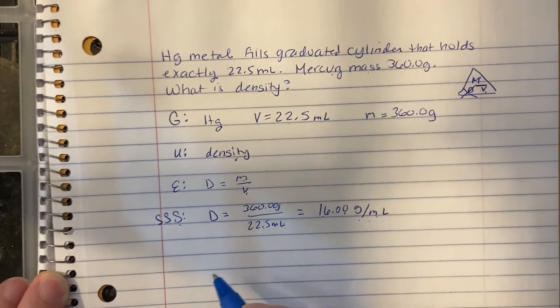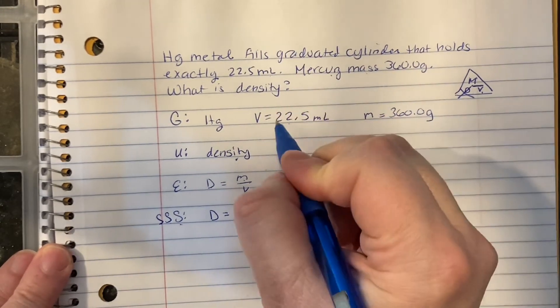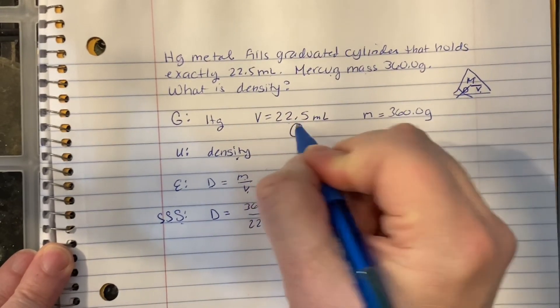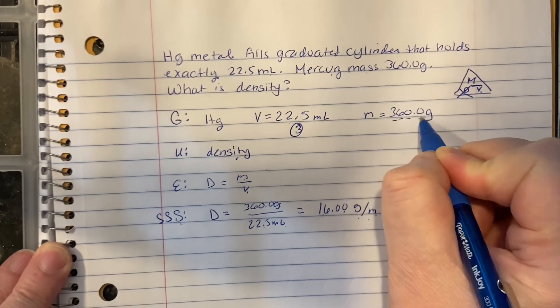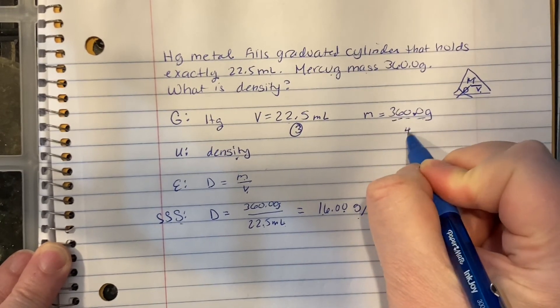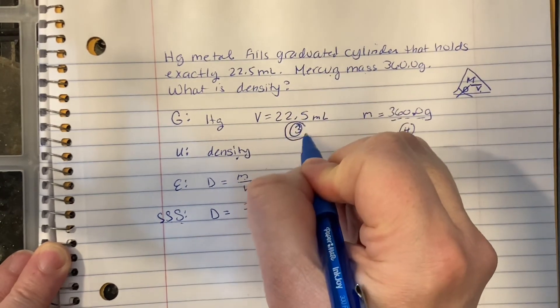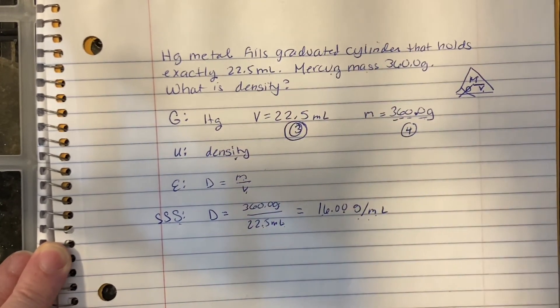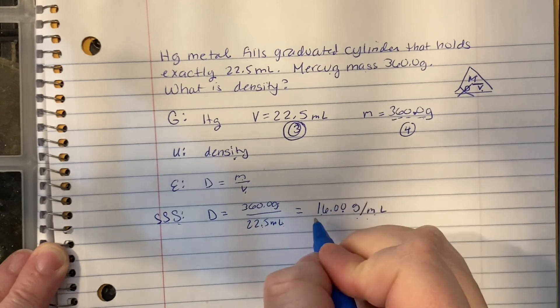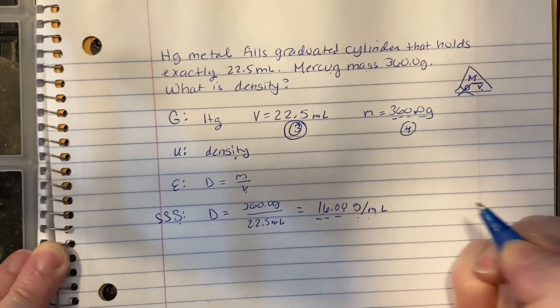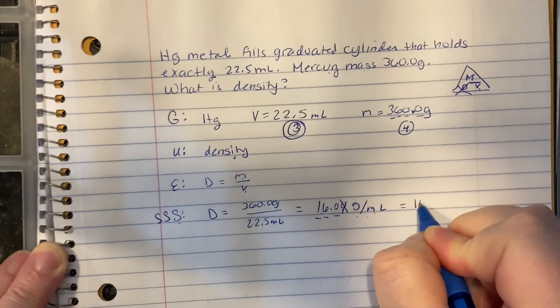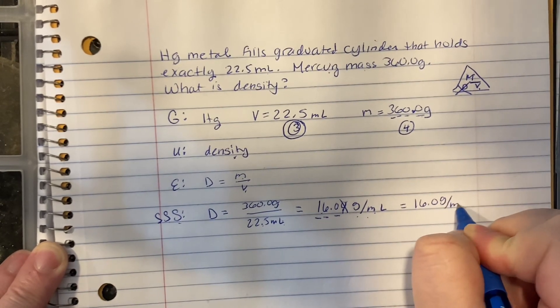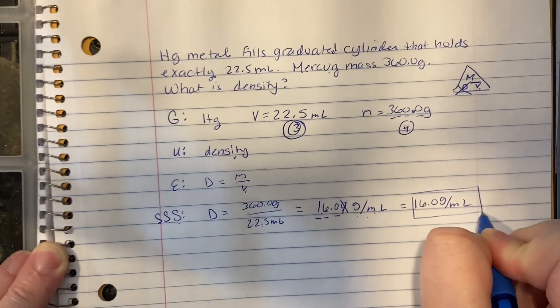Sig figs, 22.5, three sig figs. 360.0, one, two, three, four, because it has a decimal, four sig figs. So our answer, remember when we're multiplying and dividing, is least sig figs. So we need three sig figs in the answer. One, two, three is all I'm going to keep, so I'm just going to get rid of that last zero. 16.0 grams per milliliter, and I'm going to box my answer.